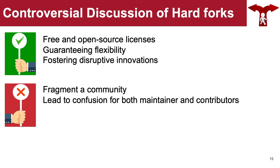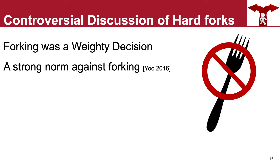Around the same time, hard forks have been discussed controversially throughout the history of free and open source software. On the one hand, free and open source licenses codify the right to create hard forks, which was seen as essential for guaranteeing flexibility and fostering disruptive innovation. On the other hand, hard forks were frequently considered risky to projects, since they could fragment the community and lead to confusion for both developers and users. Studies found that traditionally forking was a weighty decision, and there was a strong norm against forking at that time.